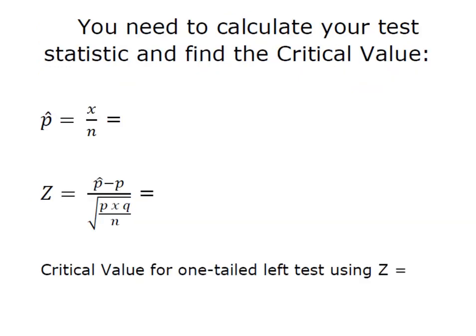In order to use the critical value approach I need two things. I need to calculate a test statistic and a critical value. So to calculate the test statistic for the test of a proportion I need a Z, and so in order to get Z I've got to start with P hat.